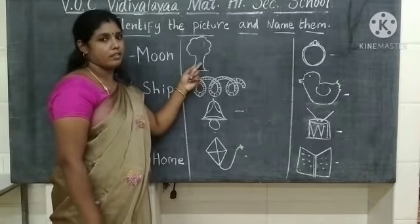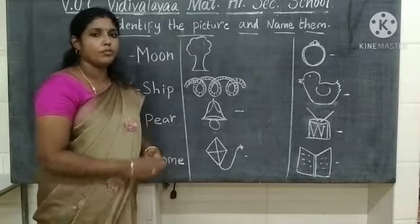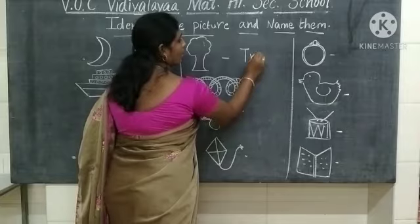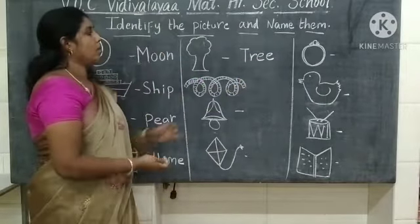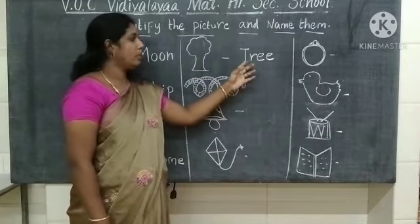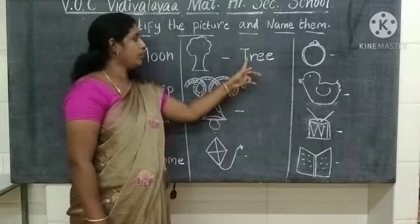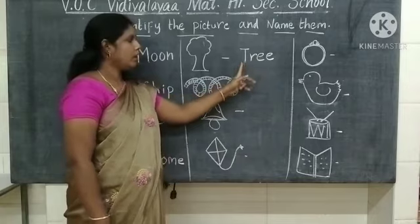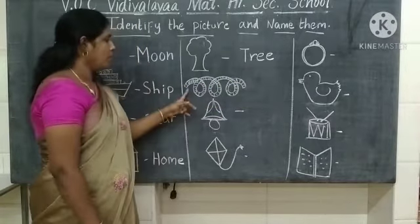What picture is this? This is a tree. What is the spelling of tree? T-R-E-E — tree. What picture is this? This is a tree. What is the spelling of tree? T-R-E-E — tree.